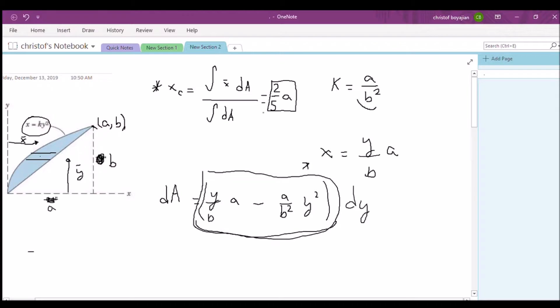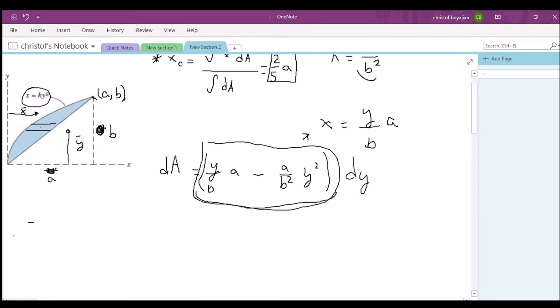In this continuation of this series we are going to find the centroid of the y coordinate, or the y coordinate centroid of this little area right here. So yc in other words. So yc should be the y bar times dA over the integral of our dA.